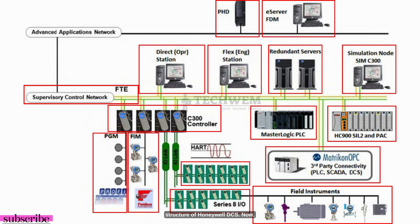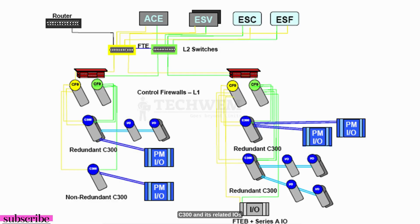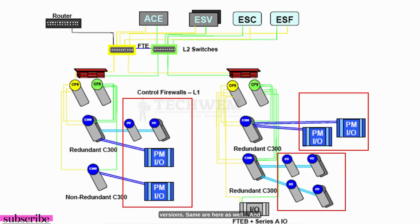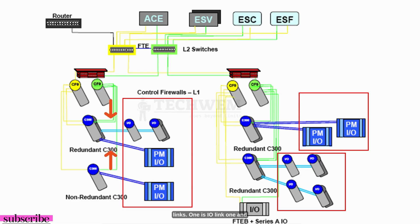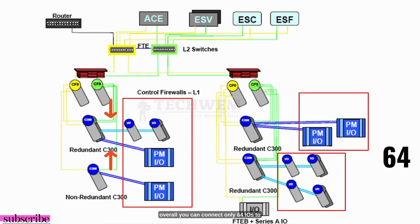This is the basic structure of Honeywell DCS. Now we are going to discuss this part in our next slide — a more elaborated slide for C300 and its related I/Os. Here you can see Series C I/Os and PM I/Os, the older versions. There are two I/O links: I/O link 1 and I/O link 2, on which you can connect different I/Os to a C300 controller. In terms of capacity, you can connect a maximum of 40 I/Os on each link, and overall a maximum of 64 I/Os to the C300.